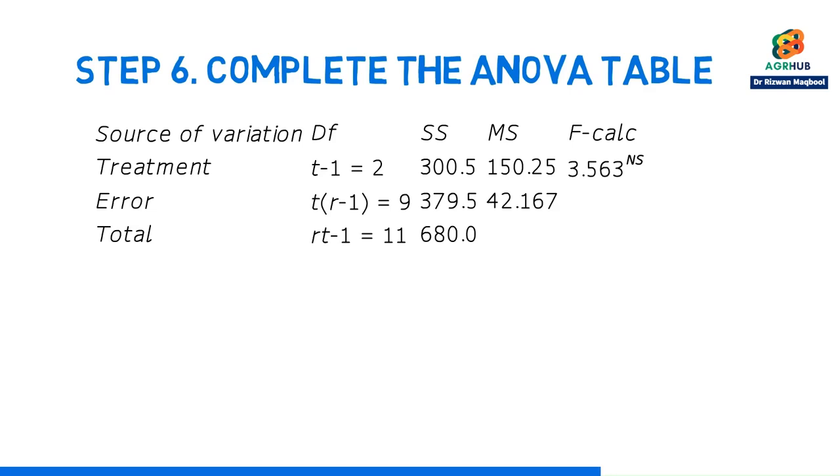Alright, so now for the sum of squares quantity, we can get that from looking back at our data step. That's why we did the data step in the first place. So, we're gonna use the sum of squares for treatment and that value is 300.5. Then, for sum of squares for error, we found that to be 379.5. And lastly, the sum of squares for total is 680, all filled in.